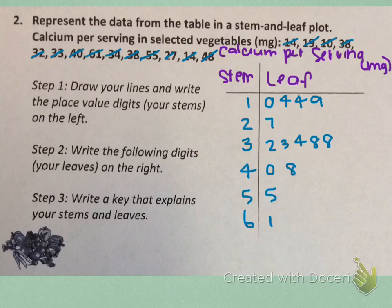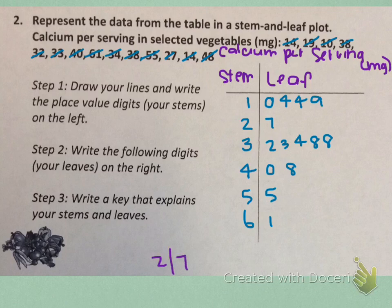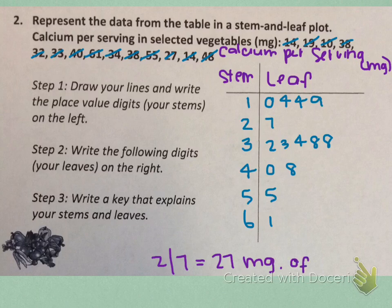All righty — so the last thing that we need to do is write a key that explains our stems and leaves. Why don't we use one of the ones that just has one leaf. I'm going to choose the stem two and the leaf seven, so I'm going to put two and then a line and then seven, and I'm going to say that this means twenty-seven milligrams of calcium.